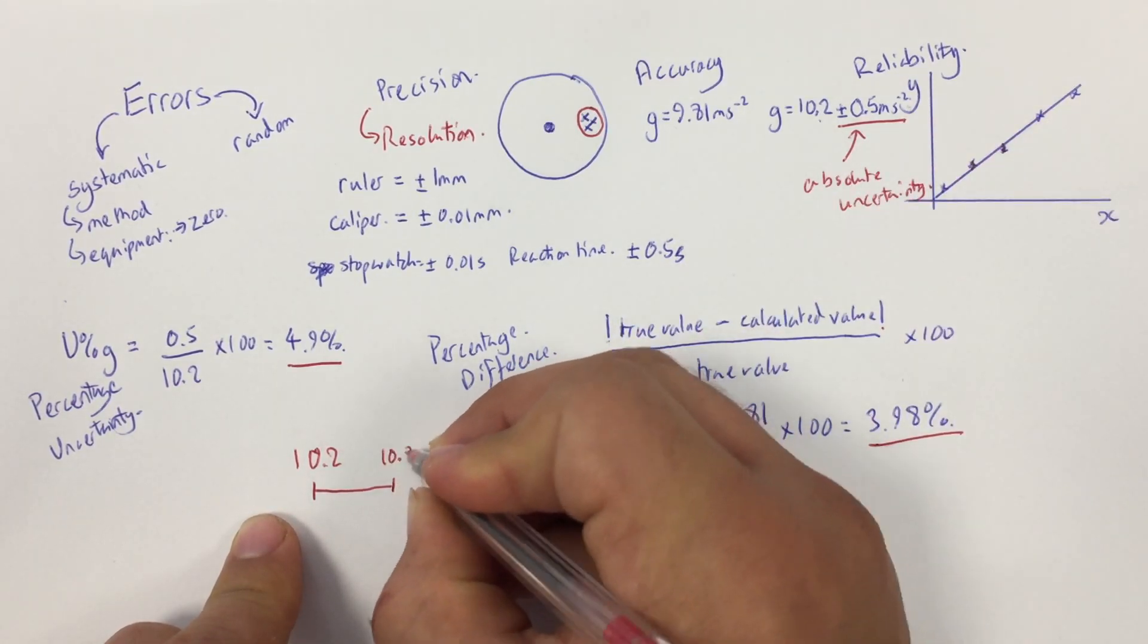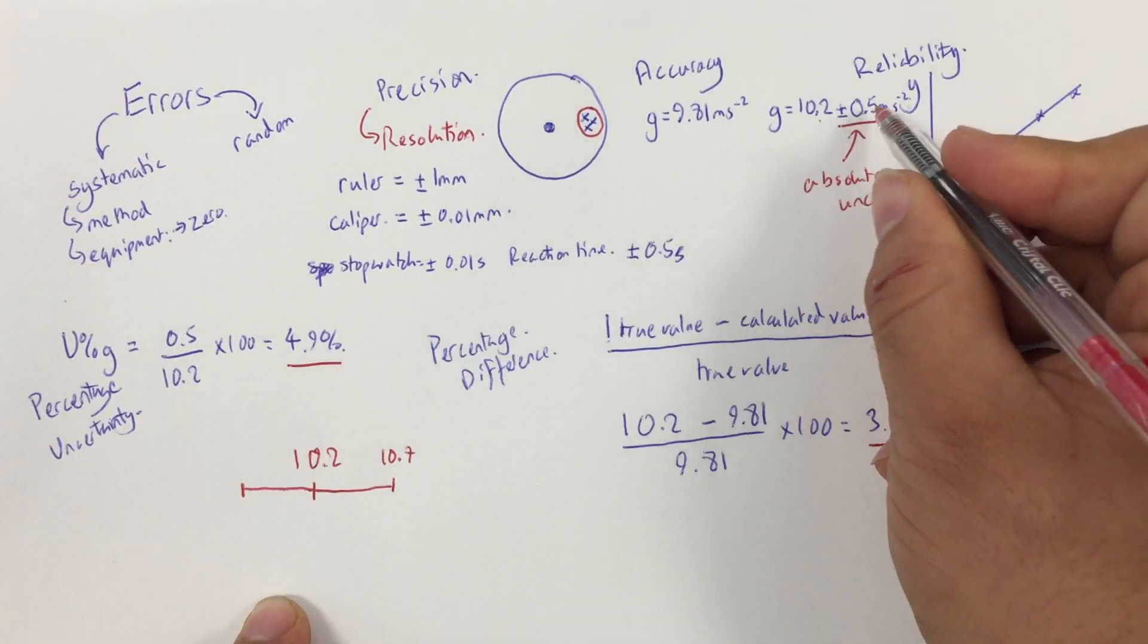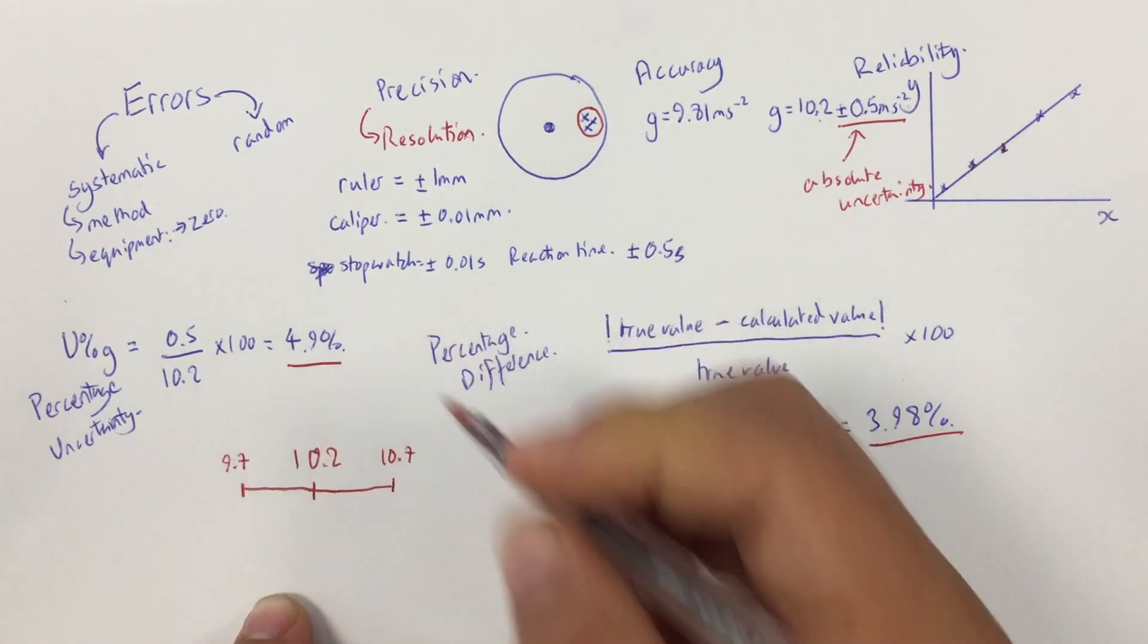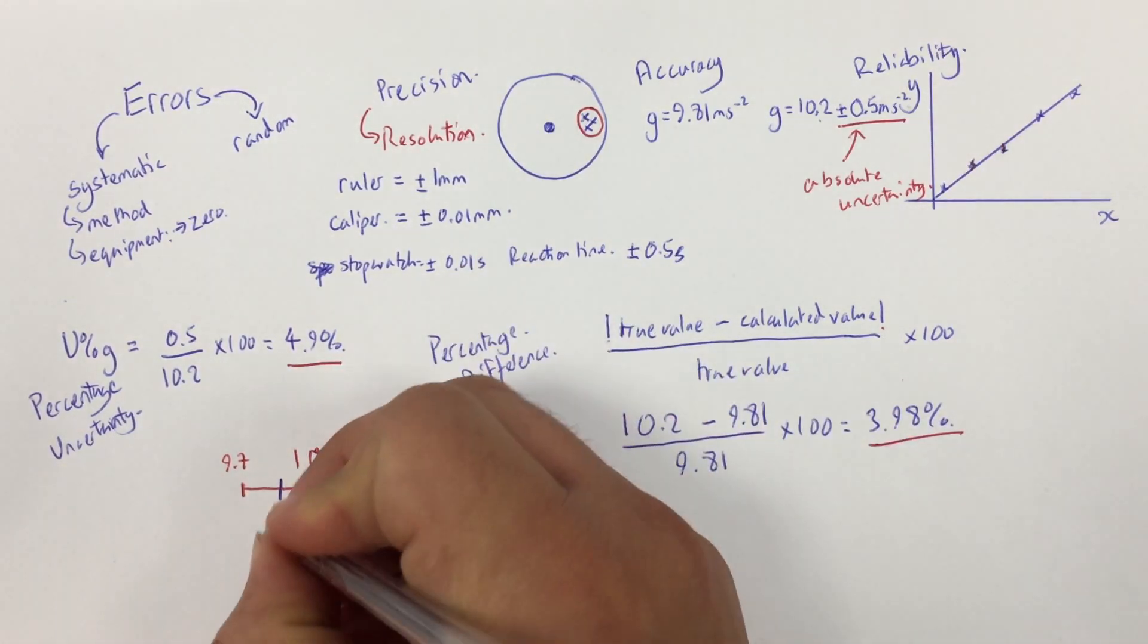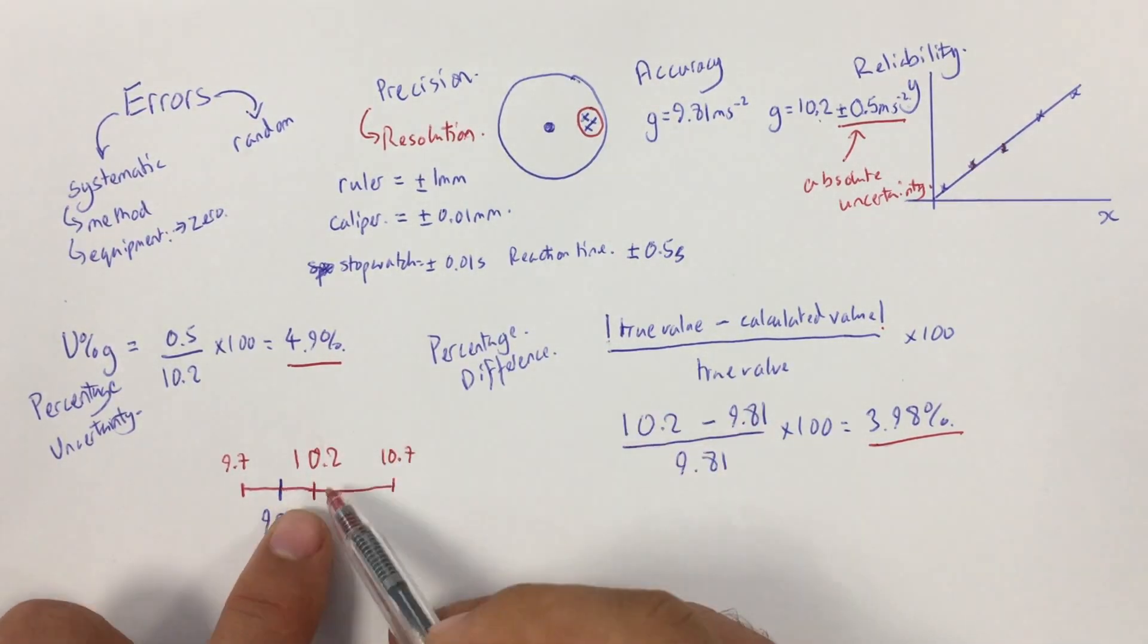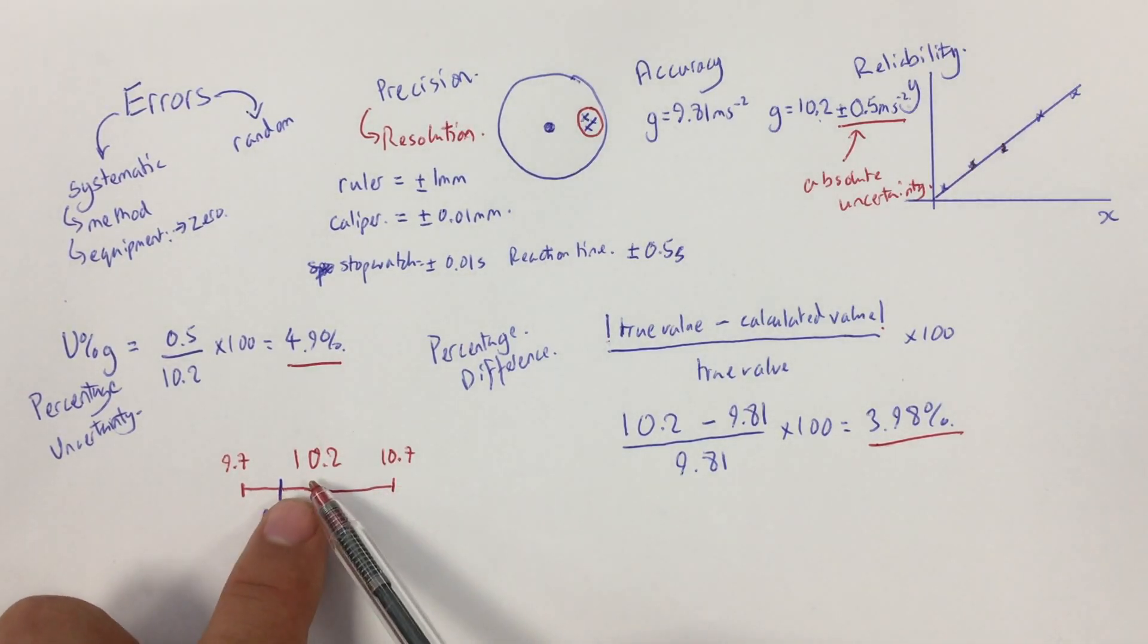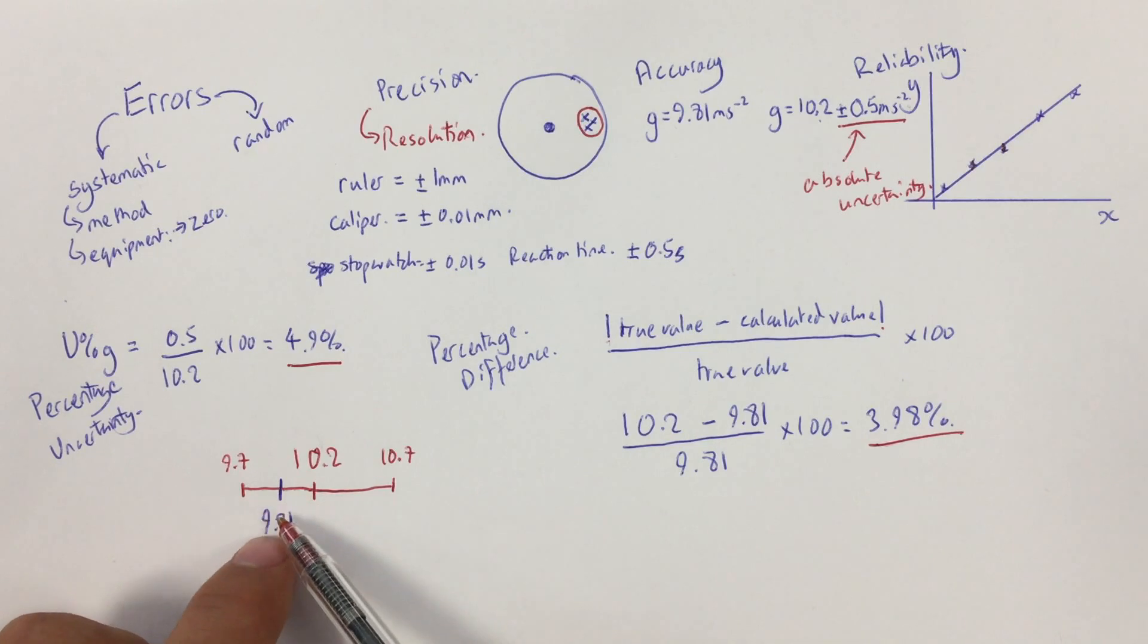So, 10.2, and I know that my value, based on my uncertainty, could be as much as 10.7, or it could be as low as, going the other way, minus 0.5, 9.7. So, that's my percentage uncertainty is 4.9%, plus or minus, either way, of that number. Now, the true value would sit about here, 9.81. Okay? Now, the true value is within my percentage uncertainty. So, in other words, the result that I have, given my uncertainty, has produced within that range of numbers the potential for the number that is the true value.